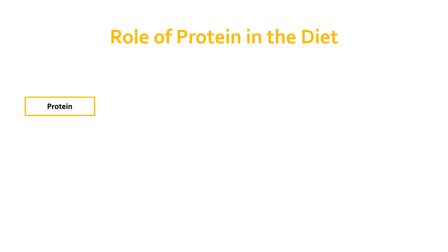When we eat protein, we begin by chewing it, which breaks it down mechanically, and we pass it into the stomach and into the digestive system, where enzymes and acid work on that protein and break it down into its constituent parts — the building blocks of protein. Those building blocks are called amino acids. All protein is constructed from amino acids of different sorts, in different numbers, varieties, and amounts, but all protein is made of amino acids.